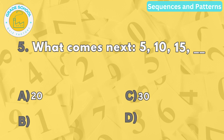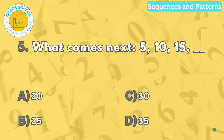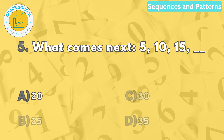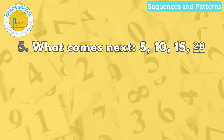Question number five. What comes next? Five, ten, fifteen, blank. The correct answer is letter A. Twenty. The sequence adds five to each number in order.